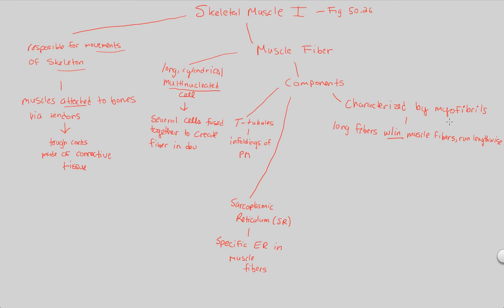Within myofibrils, we have two more subunits called filaments. There are two types of filaments. One is referred to as the thin filament — always think of actin. It's more commonly referred to as just actin. The thin filament contains two strands of actin. Actin is a contractile protein, meaning it allows for muscular movements and mechanical force to occur. It also has structures called myosin binding sites, which we'll address later.